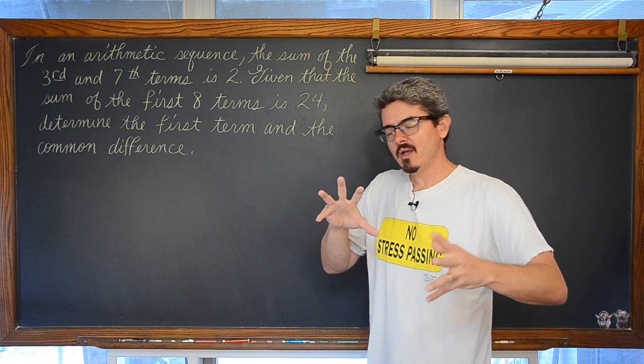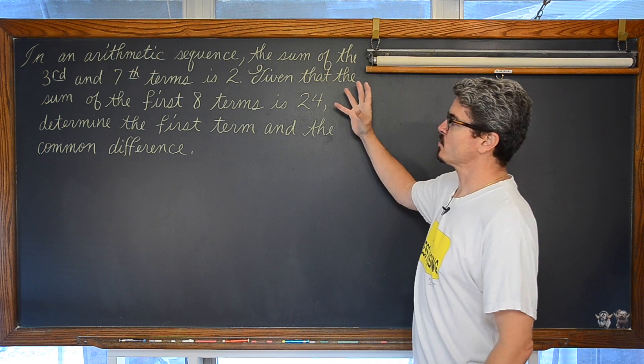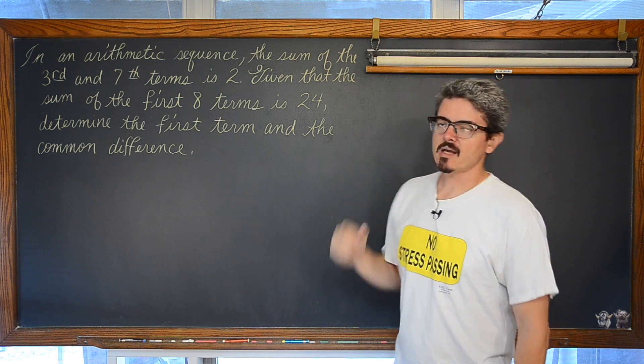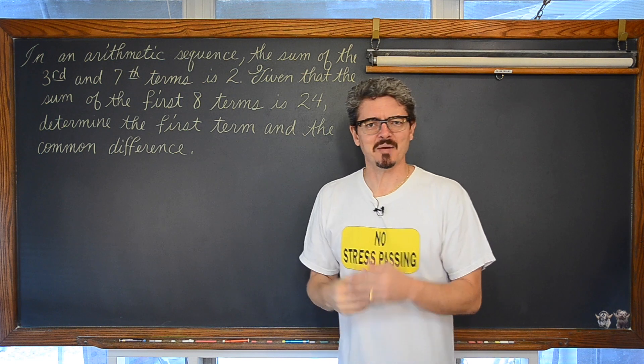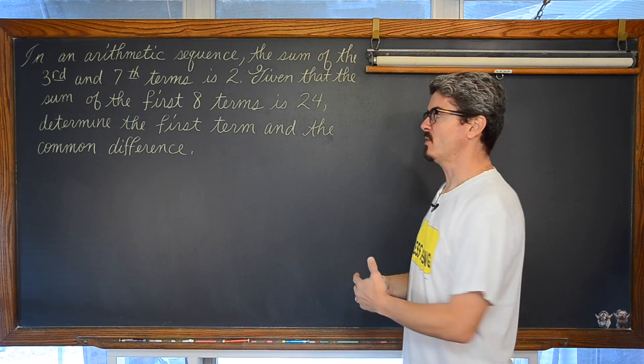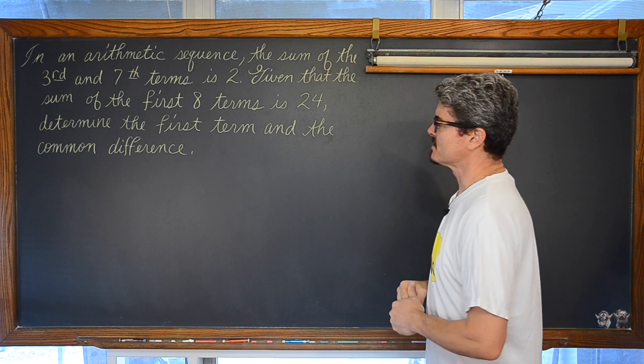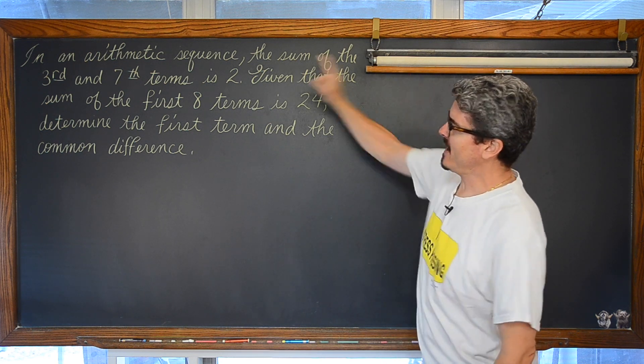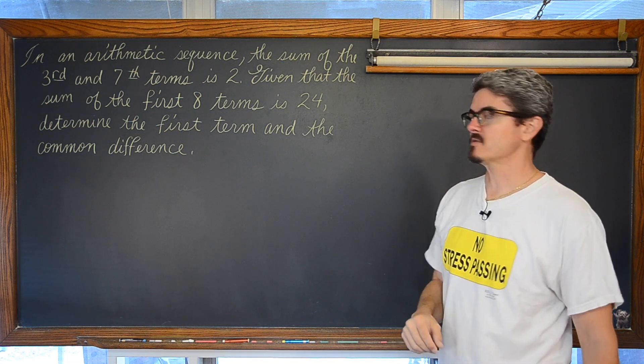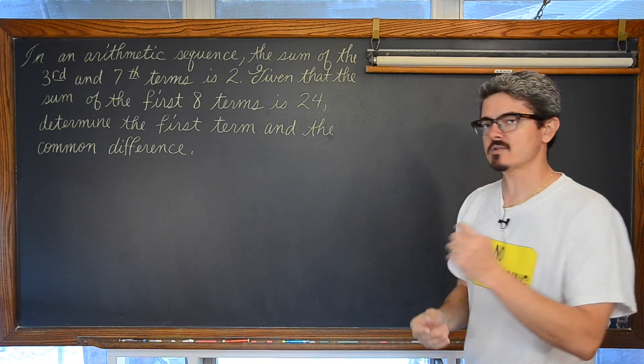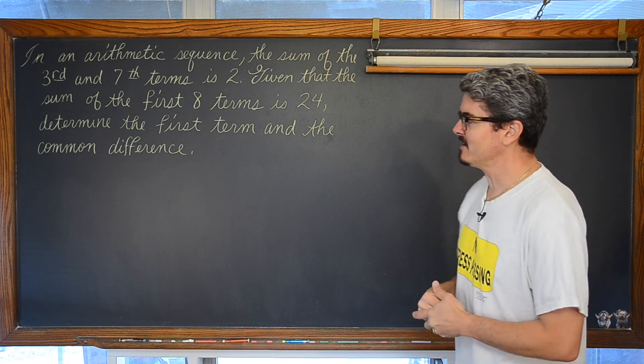But this time we are going to have to dig into our toolbox and use multiple skills at the same time. This is written and inspired by a type of question that you may see on an IB math exam, something like a bonus question or just involving more than one or two skills at the same time. In an arithmetic sequence, the sum of the third and seventh terms is two.